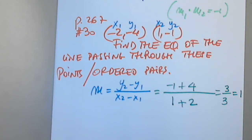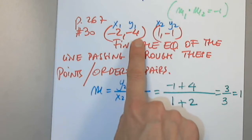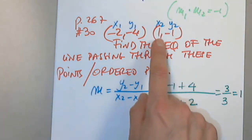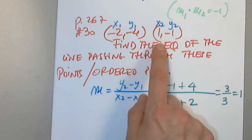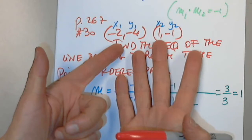How do you get negative 4? Negative 1 minus negative 4 is negative 1 plus 4 — the sign changes. And 1 minus negative 2 will be 1 plus 2. Is the y-intercept given? No.